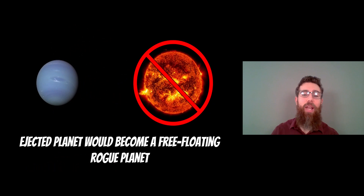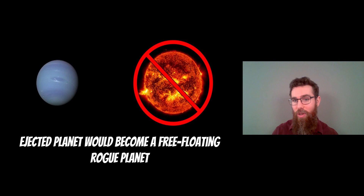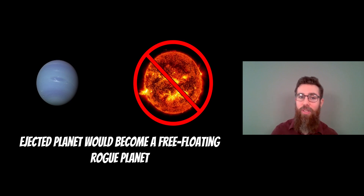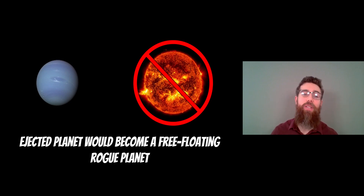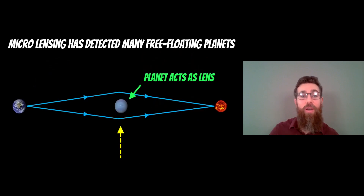An ejected planet then becomes a free-floating rogue planet — it no longer orbits a star. It's just free-floating in space with no star, and we have actually found quite a lot of these planets.